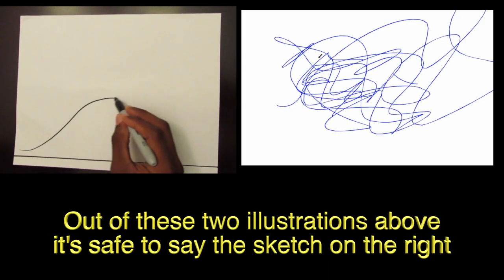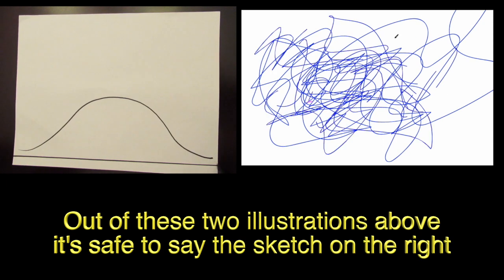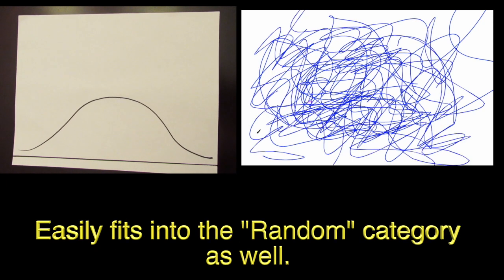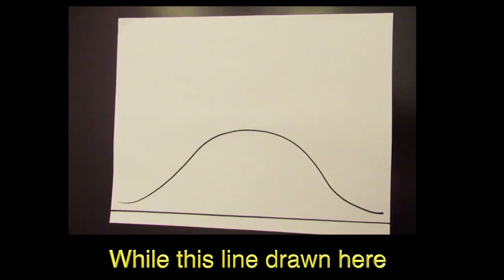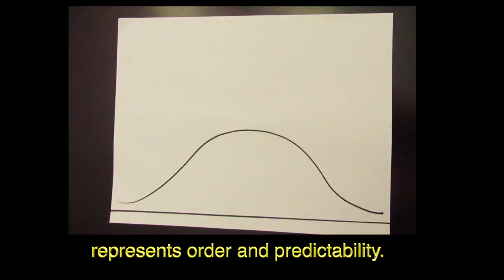Out of these two illustrations above, it's safe to say the sketch on the right easily fits into the random category as well, while this line drawn here represents order and predictability.